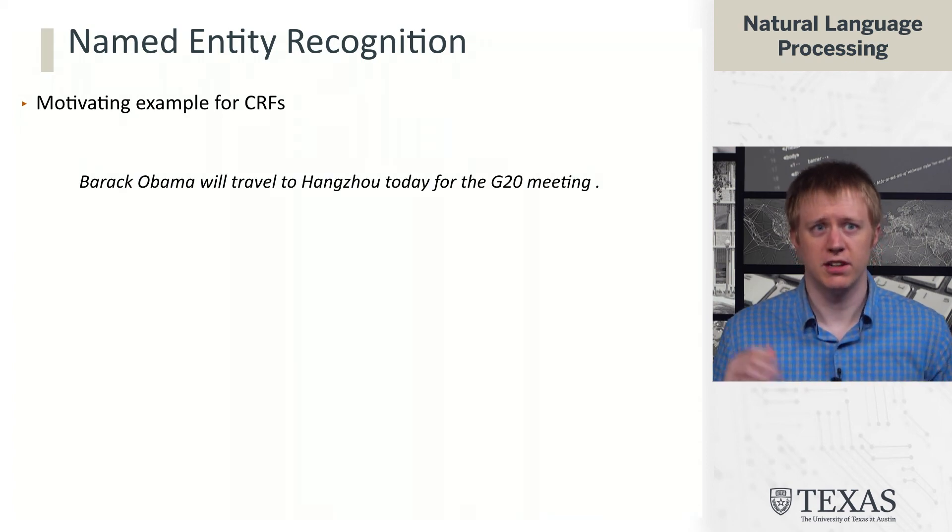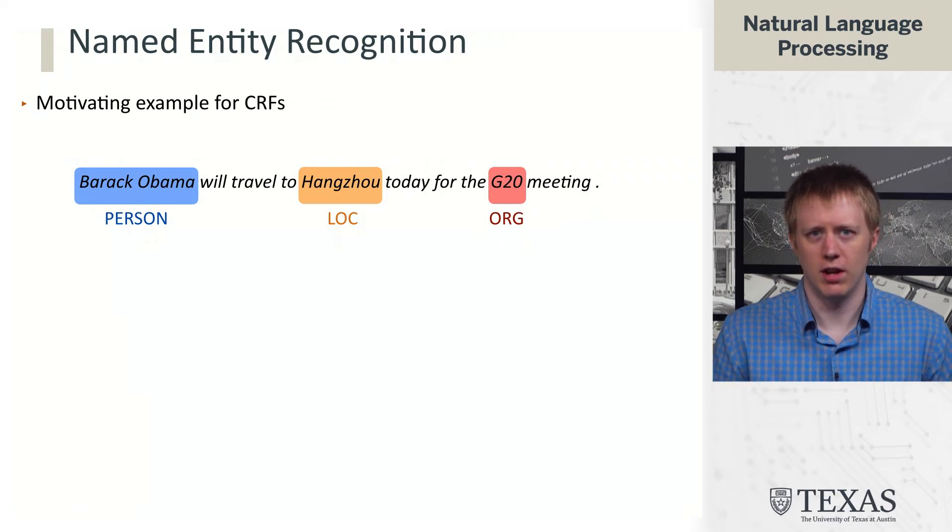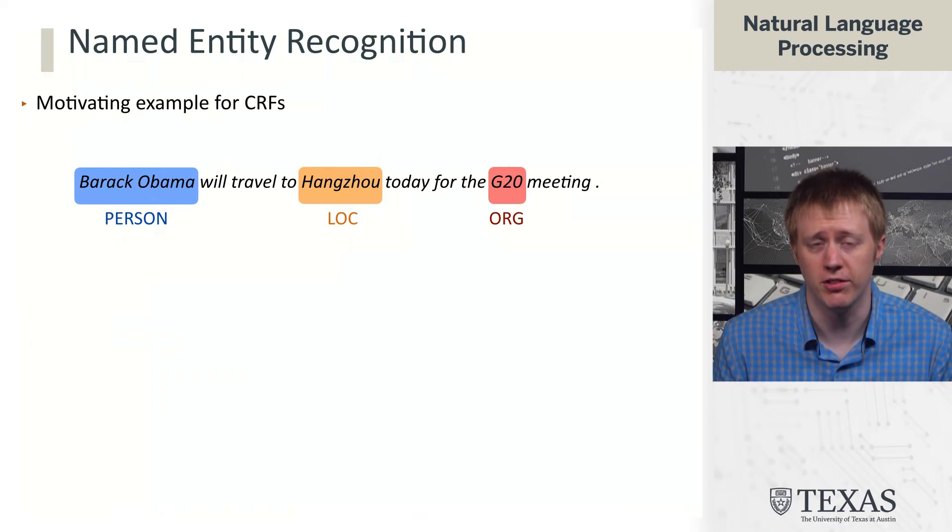So named entity recognition is roughly the following problem. If we have a sentence like, Barack Obama will travel to Hangzhou today for the G20 meeting, we want to identify that there are some chunks of essentially sequences of words in this sentence that correspond to real world entities and we want to label those entities with what type they are. For example, Barack Obama is a person, Hangzhou is a location, and the G20 is an organization.